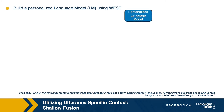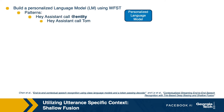Here is an approach to do explicit boosting called shallow fusion. Here we build a personalized language model using the list of contextual words. We query this personalized language model at different steps of decoding and get a score from it. This personalized language model gives us a non-zero boosting score for hypotheses that contain one of the contextual words. In this approach, we can boost occurrence of contextual words appearing in a specific language pattern.